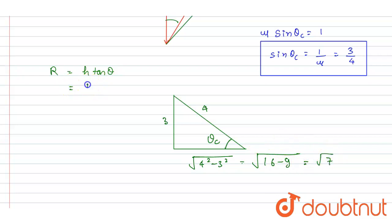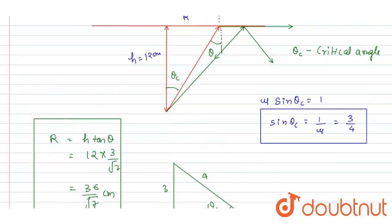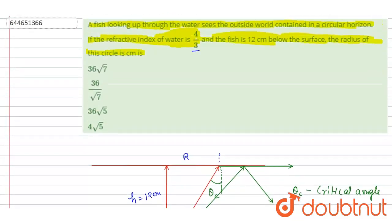So I will write h is 12, tan theta is 3 by under root 7, that is 36 by under root 7 centimeter. And this is the answer of this question. Now if you see here, 36 by root 7 is b.